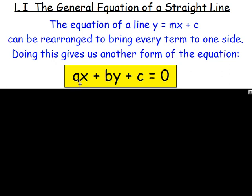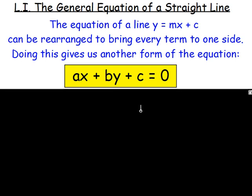You could have 7x, negative 2x, and c is just going to be whatever number c is. Obviously if it was a plus 5, you subtract 5 from both sides and move it over — you then have negative 5. But a, b, and c are just going to be numbers — it's another way of writing it.